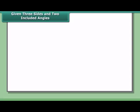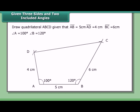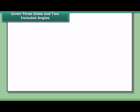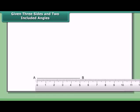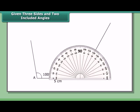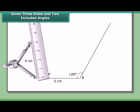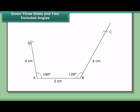Given three sides and two included angles, draw quadrilateral ABCD where AB = 5 cm, AD = 4 cm, BC = 6 cm, angle A = 100°, angle B = 120°. Steps: 1. Draw AB = 5 cm. 2. At A draw 100° and at B draw 120°. 3. Mark off AD = 4 cm and BC = 6 cm. 4. Join CD. ABCD is the required quadrilateral.